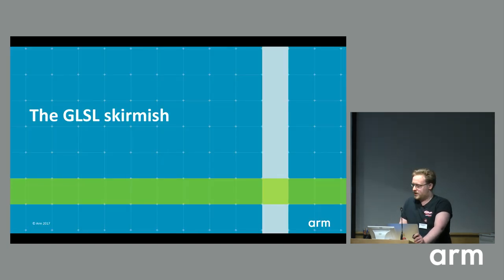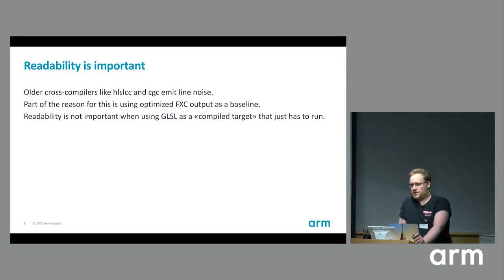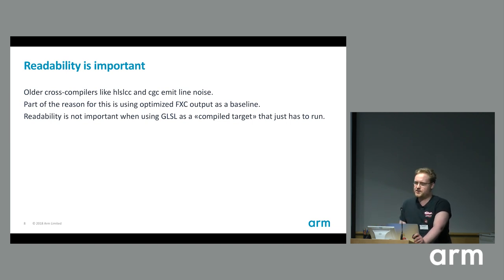Starting with GLSL — clean shading language output is something that cross-compilers are really bad at, or have been really bad at. HLSLCC is the perfect example. I think readability is important, especially since SPIRV is so clean that you can get good output — almost a one-to-one match, GLSL to SPIRV to GLSL. That's pretty important, because most older cross-compilers went through FXC DX bytecode, which looks really weird, and then tried to translate it to high-level code — it's basically line noise.